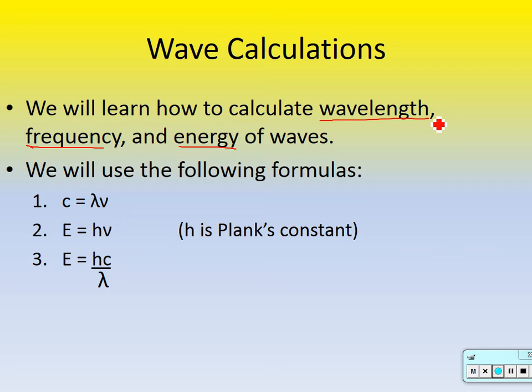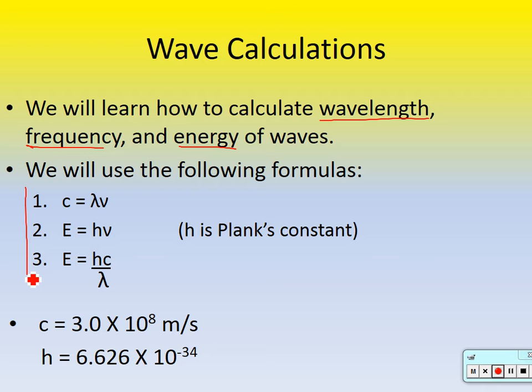We're going to use these equations. Take a second and fill out the wave equations — one, two, and three. I would also like you to write down these constants. C is a constant — the speed of light is constant — it's 3 times 10 to the 8th meters per second. And H is another constant; we'll talk about it in a second.